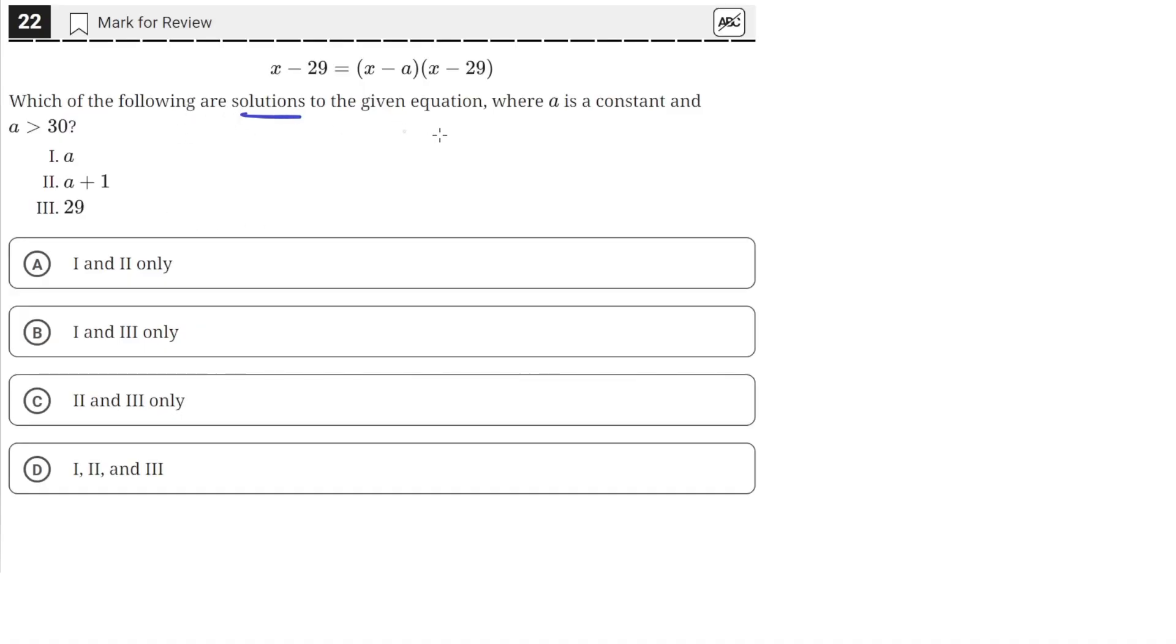Which of the following are solutions to the given equation where a is a constant and a is greater than 30? So we have this equation here and let's manipulate this so that we can factor by grouping.